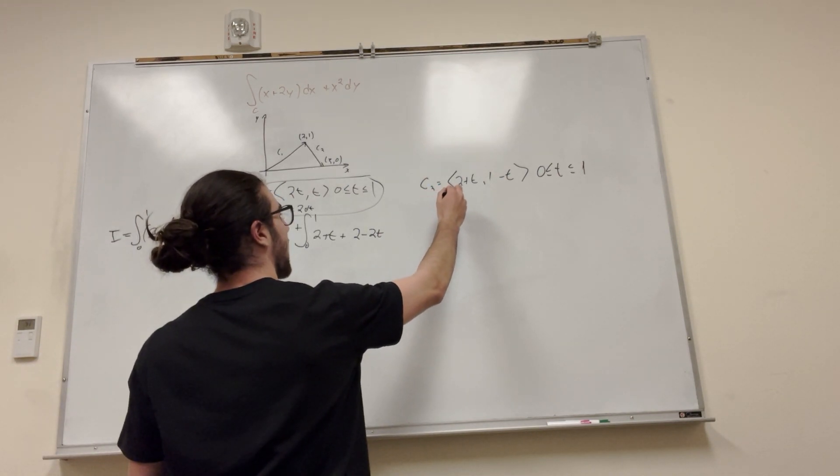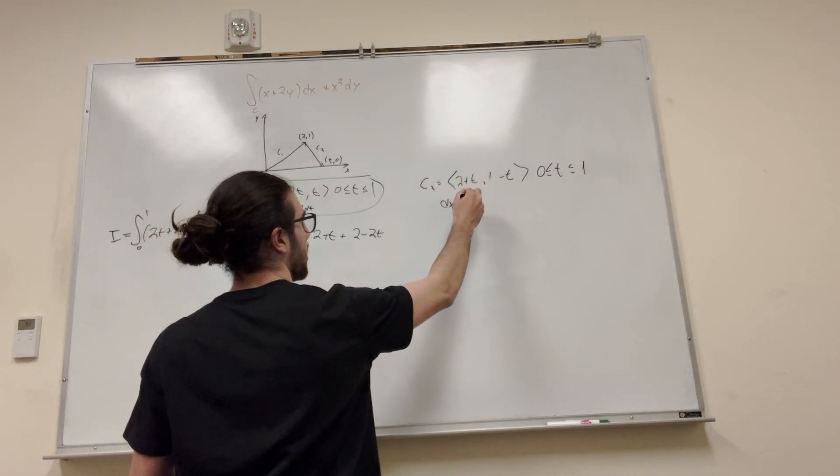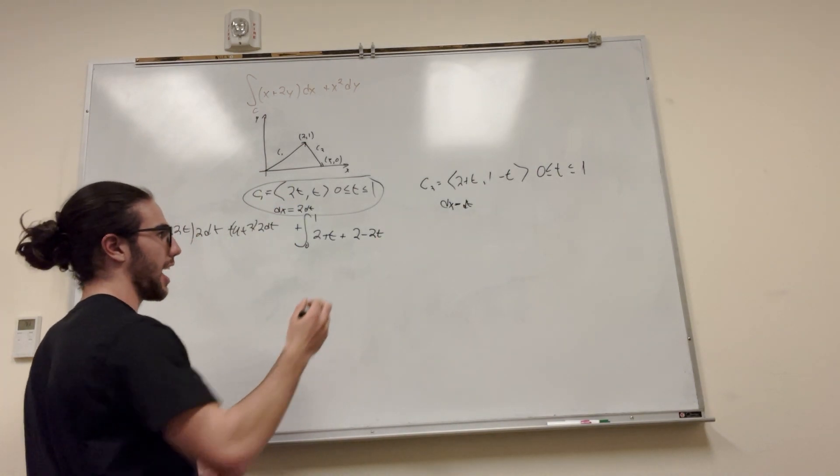We take the derivative with respect to x, which is just equal to dt. So no change is going to happen here, it's going to be dt.